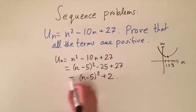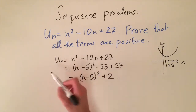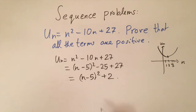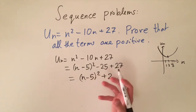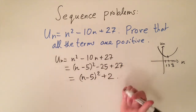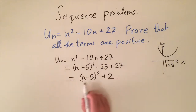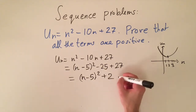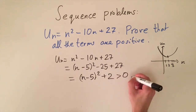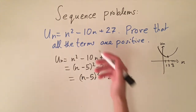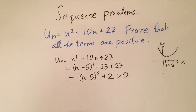This is the completed square form of the formula. We can see that (n - 5)² is always non-negative — it's zero or positive. Adding the positive number 2 means the result can only ever be positive. This proves that the sequence only produces positive terms.